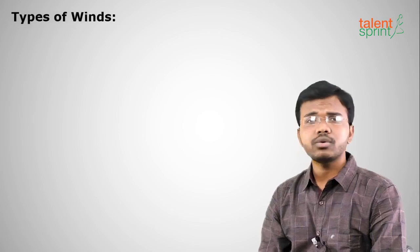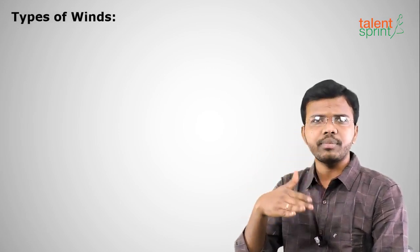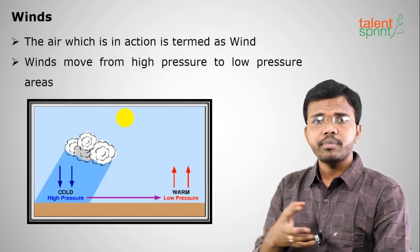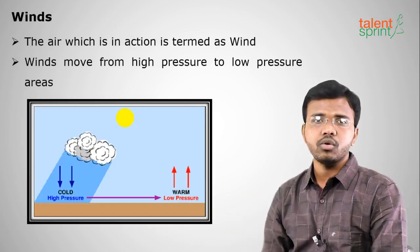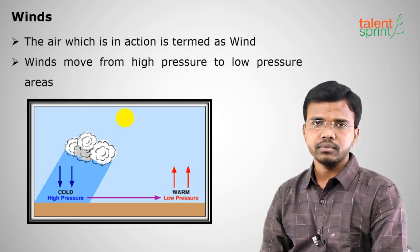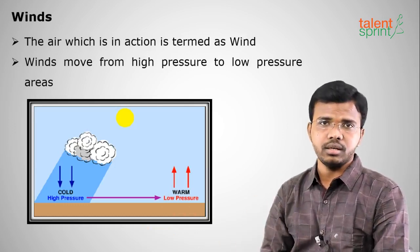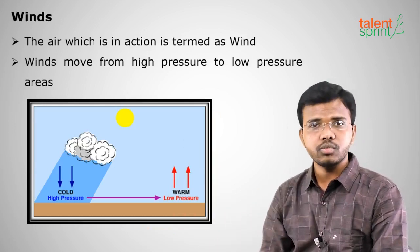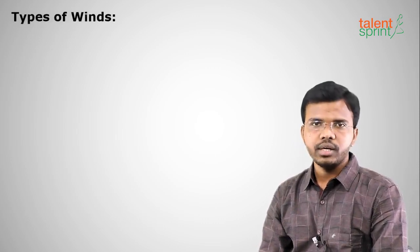Moving on to types of wind. Wind moves from high pressure area to low pressure area, because high pressure area has higher weight so it moves to a lower pressure area. If you are receiving air towards you, you are at low pressure and the air is coming from a high pressure area.